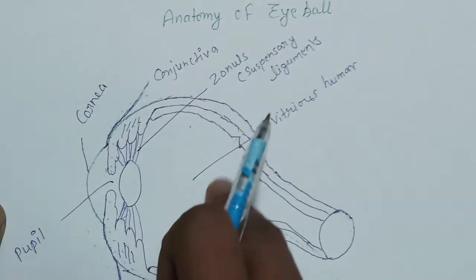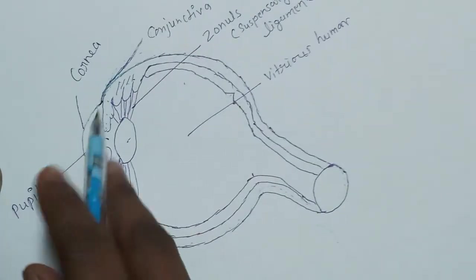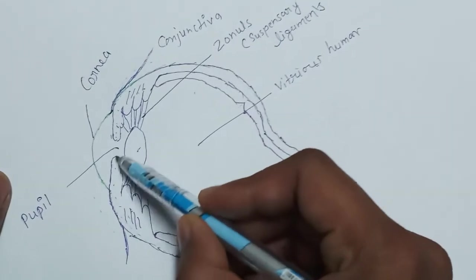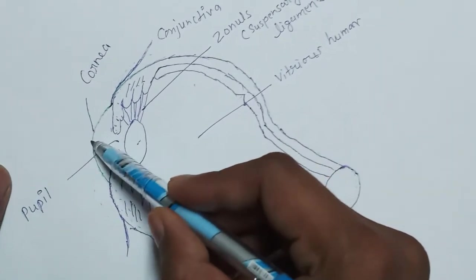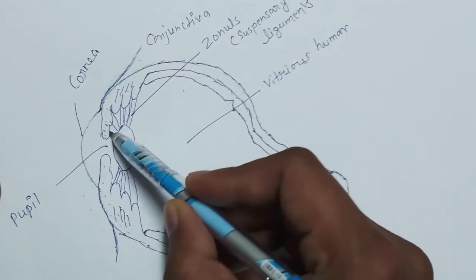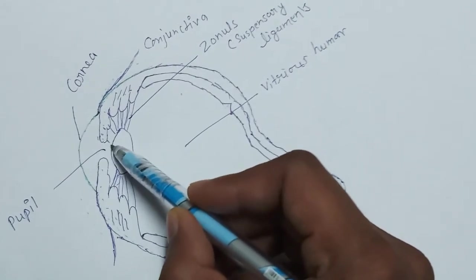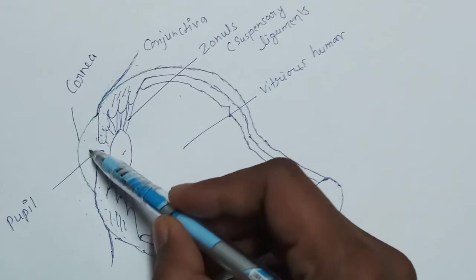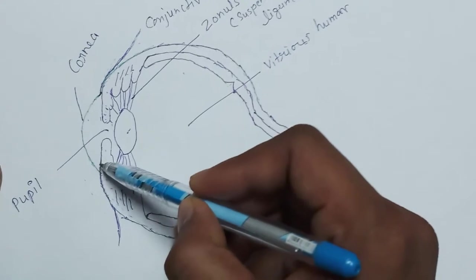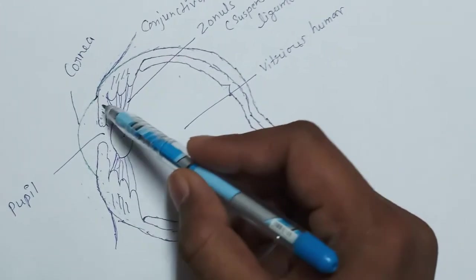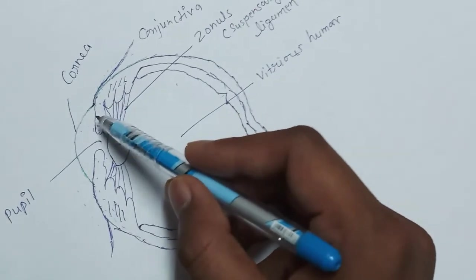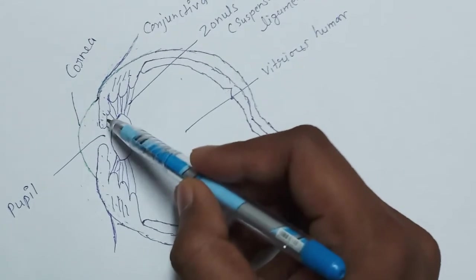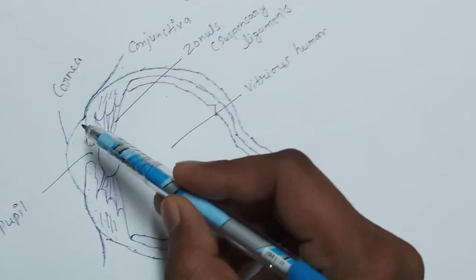This area is called the posterior segment, and the area in front of the lens is called the anterior segment. Behind the lens is the posterior segment, and here the iris is located. The anterior segment is divided into two parts by the iris: number one is the anterior chamber, and number two is the posterior chamber. From the lens to the iris is the posterior chamber; in front of the iris is the anterior chamber.